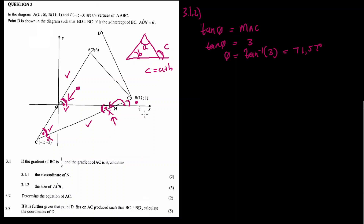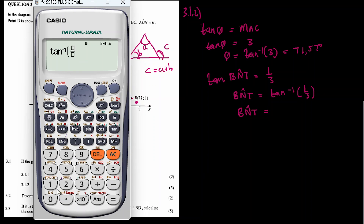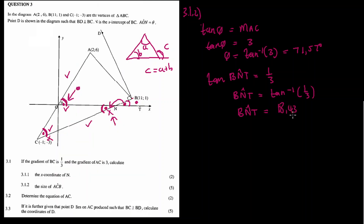Now calculate the angle of inclination for line BC. Tan(BNT) = gradient of BC = 1/3. So angle BNT = arctan(1/3). Using a calculator: shift, tan, 1/3 = 18.43 degrees.